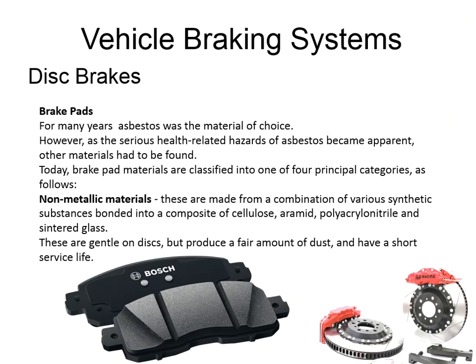Whilst brake pad friction material used to be made of asbestos — because of its good heat tolerance, quiet operation, and wear properties — it's such a dangerous substance that other materials had to be found. Generally, these days we're likely to find one of four different types. First is non-metallic: gentle on the discs, but produces quite a lot of brake dust and has a short service life.